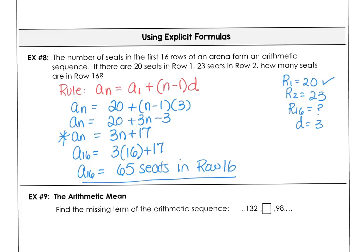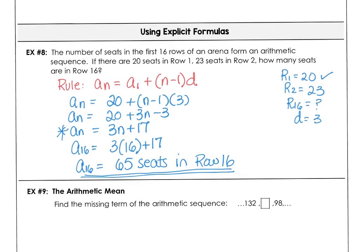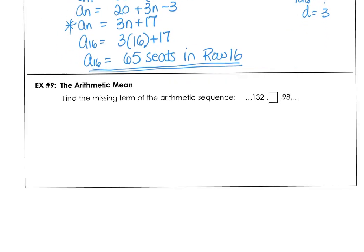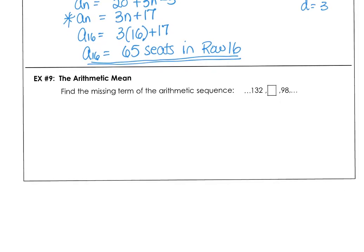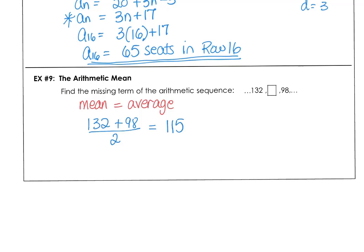Our final example covers the arithmetic mean. When we want to find the missing term of an arithmetic sequence, that sounds like the average. The mean is the average, so we just take 132 plus 98 divided by 2, which gives us 115. The missing term between 132 and 98 is 115. And that is the end of Lesson 1.